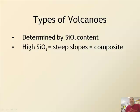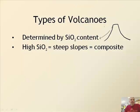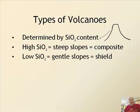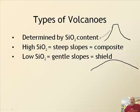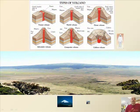Because high-SiO2 magma doesn't ooze well, composite volcanoes tend to have a steep slope — the lava can't flow downhill very well. Conversely, low silicon dioxide volcanoes have a gentle slope. For example, the shield volcano in Hawaii — Mount Kilauea — has a very gentle slope.